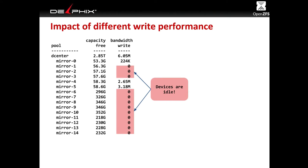You might observe this with zpool iostat — you can sometimes catch it writing but not to all devices. This is sometimes hard to see because the timescale of one transaction group is only a couple of seconds and zpool iostat only outputs once per second. It's easier to see in the sub-second granularity graph shown before. But you can definitely catch it sometimes, and if you do, you know you have this problem.